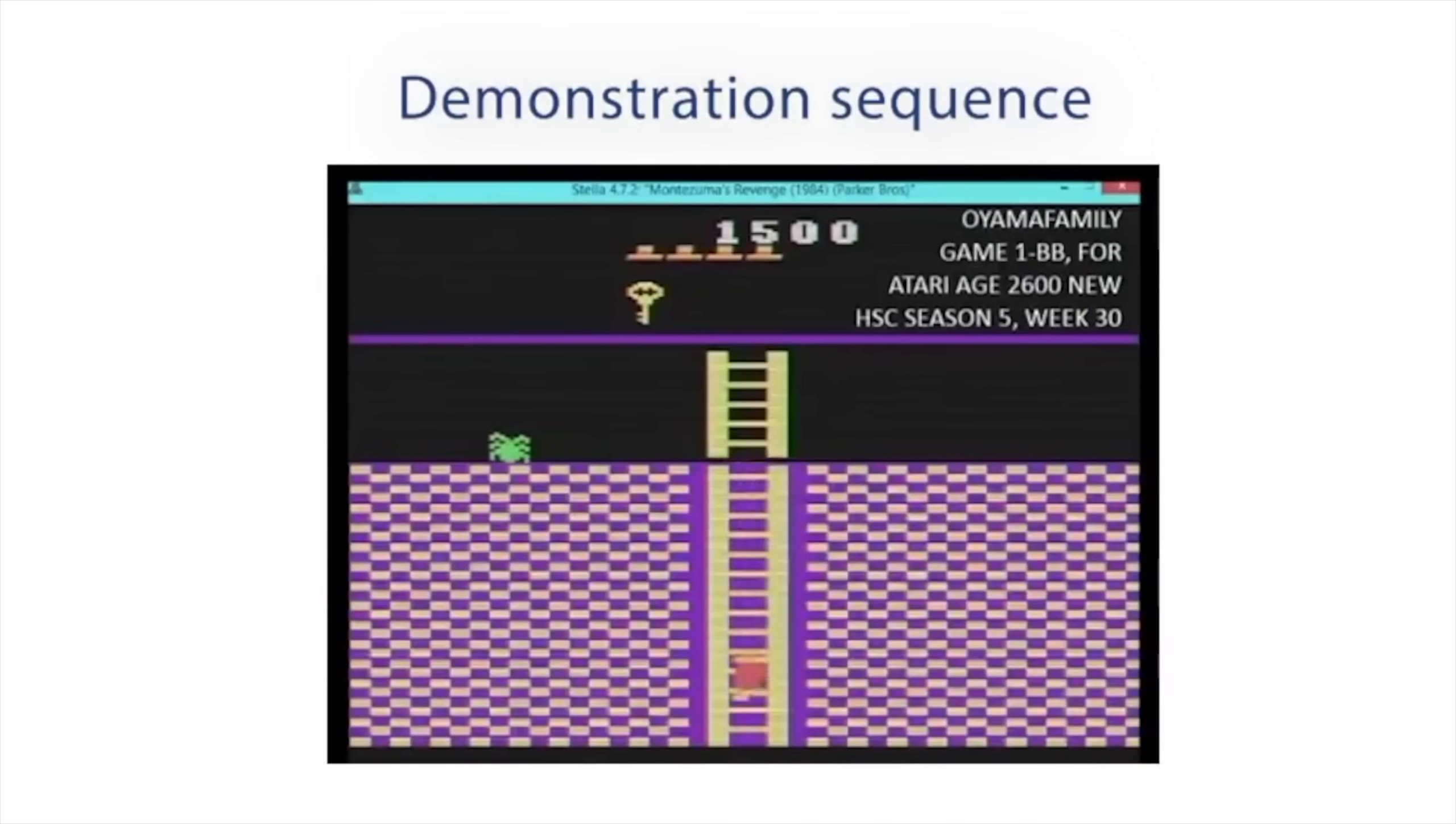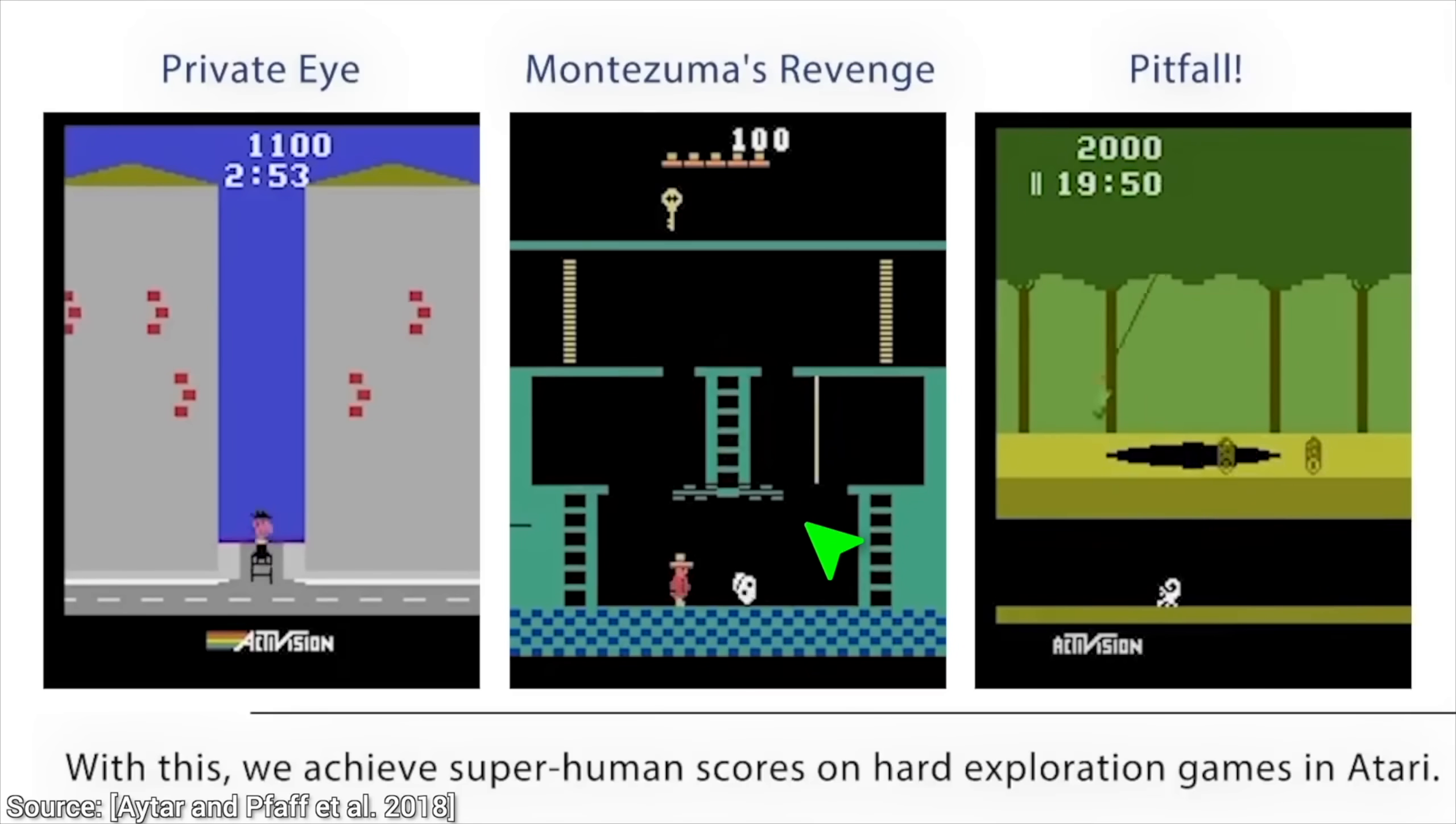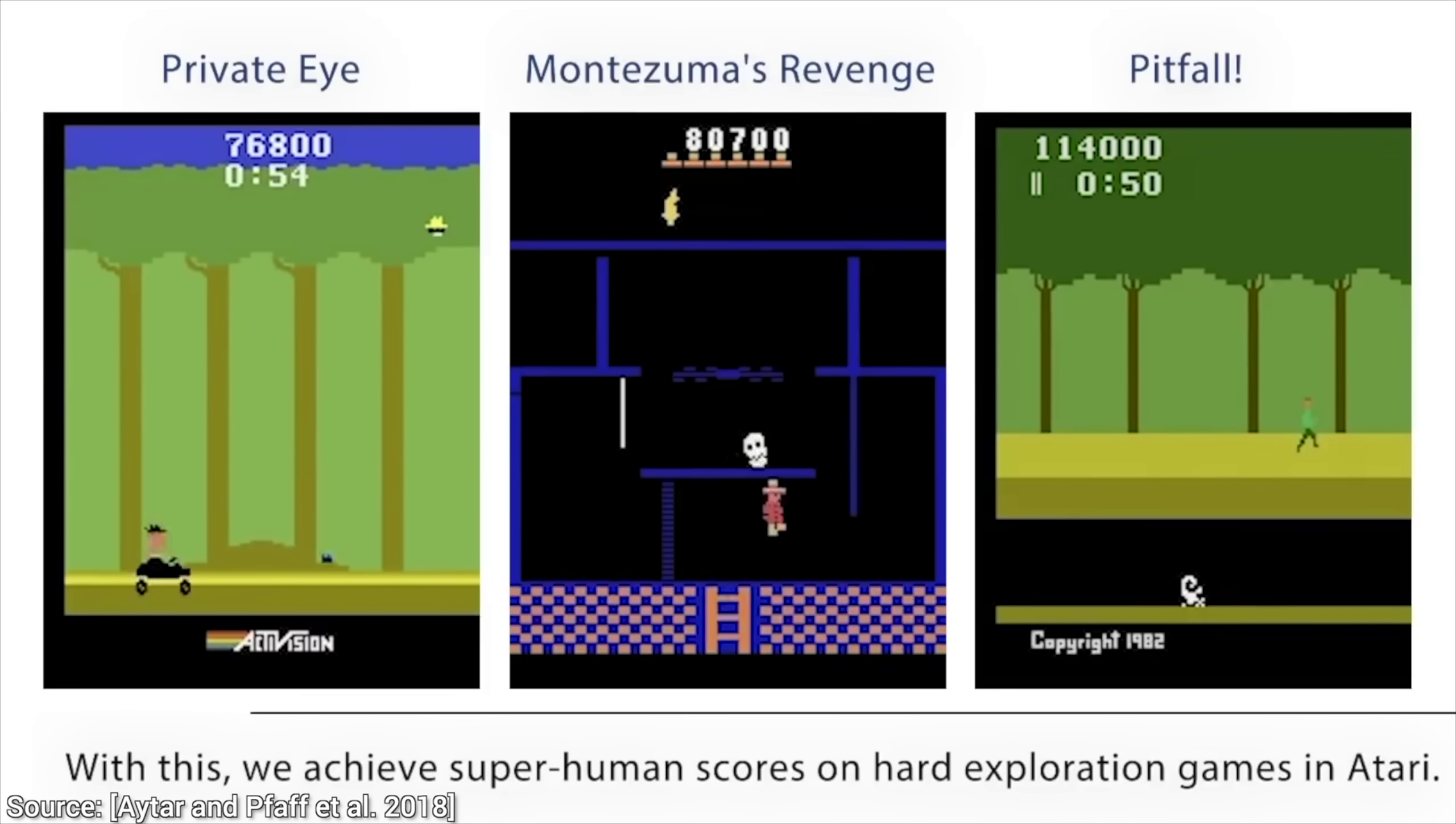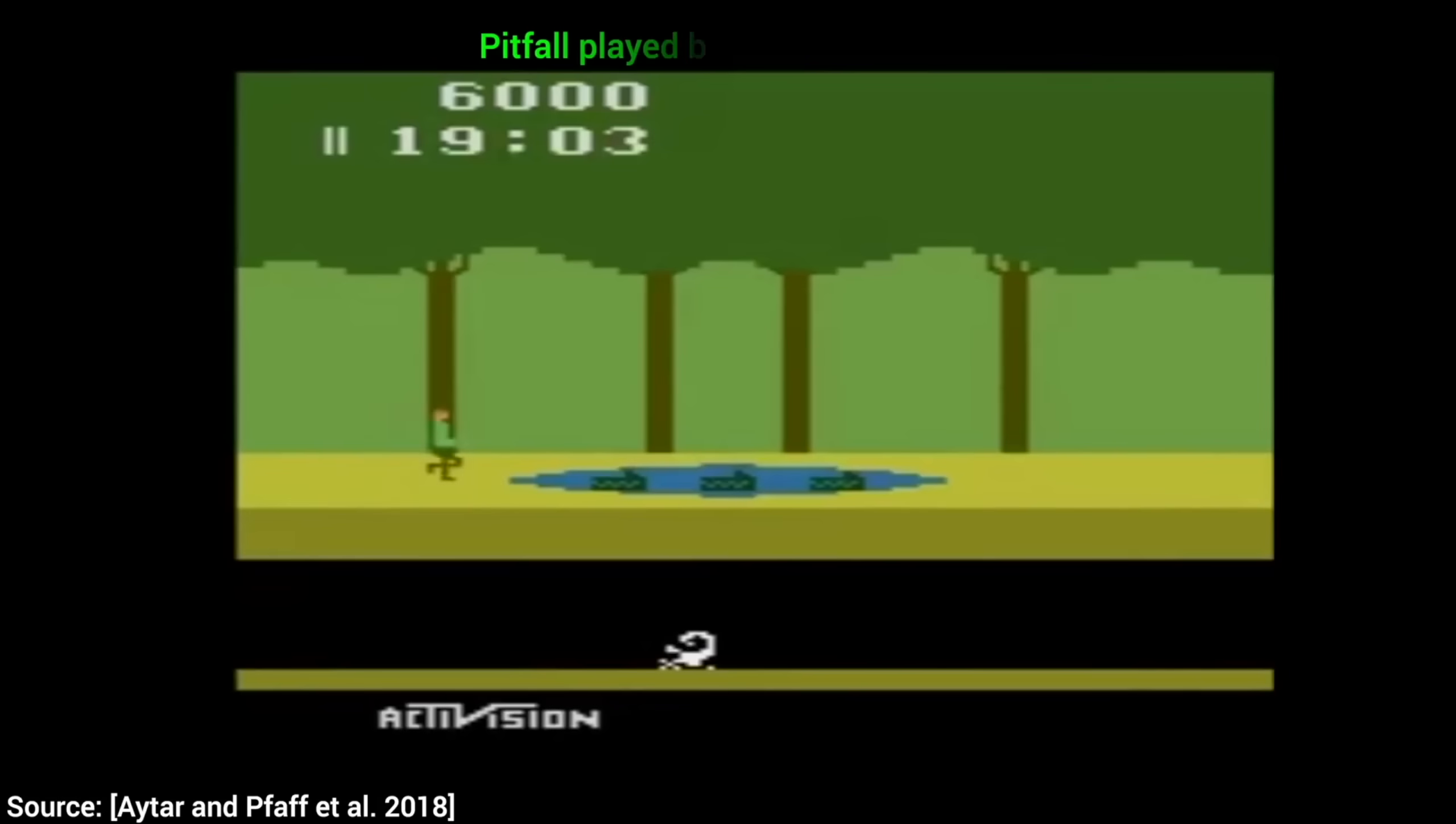In a previous paper, scientists at DeepMind harnessed the power of YouTube by having their AI watch humans play games, and then, they would ask the AI to solve hard exploration games, and it just ripped through these levels in Montezuma's Revenge, and other games too.